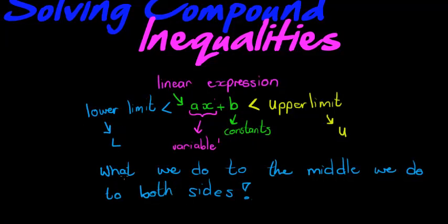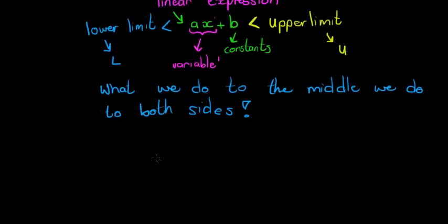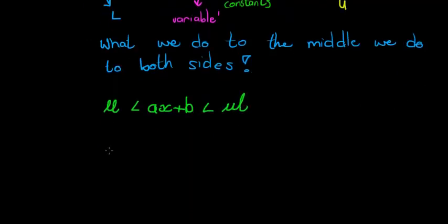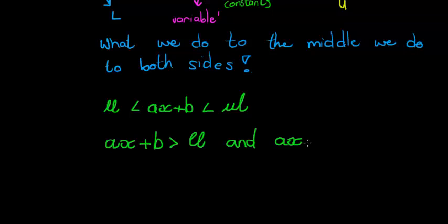Let me quickly explain what I mean by this — what we do to the middle we do to both sides. What you should understand about this type of expression: if I have ax plus b, and it is greater than a lower limit and smaller than an upper limit, that means ax plus b is greater than the lower limit, AND ax plus b is smaller than the upper limit.